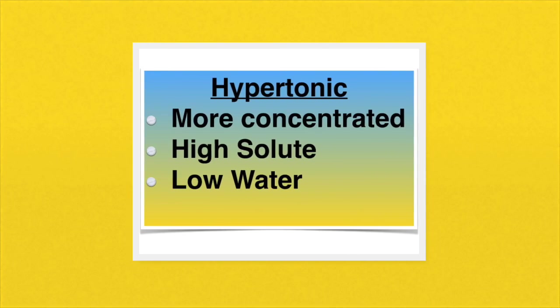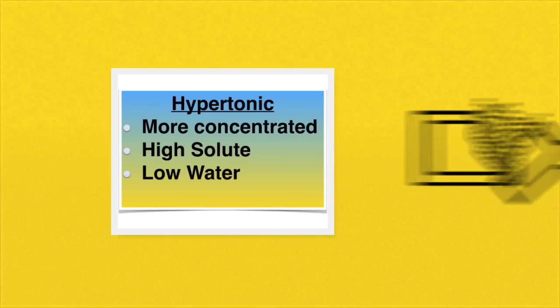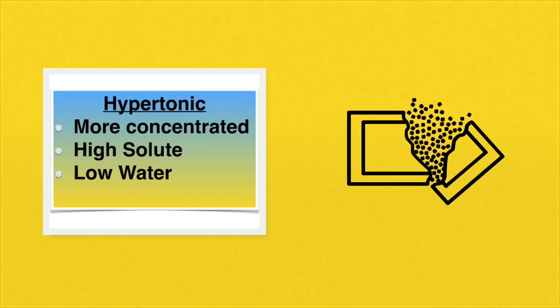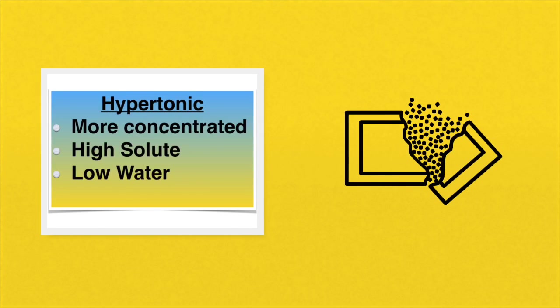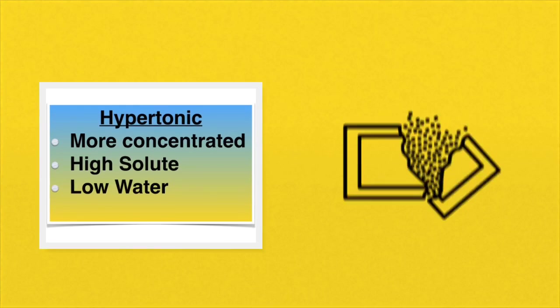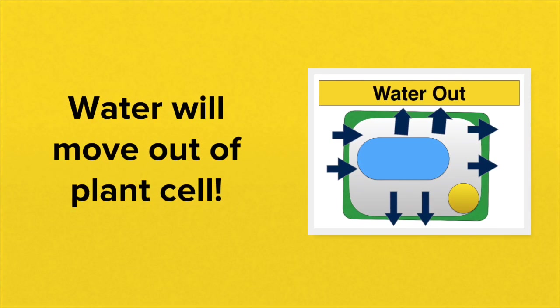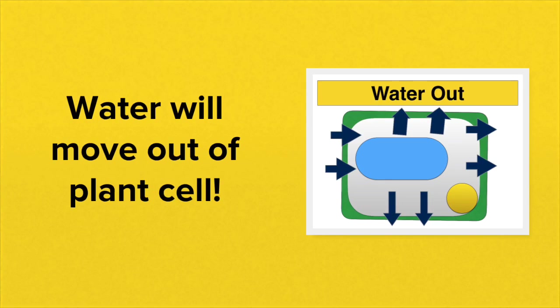So if we put our plant cells into a hypertonic solution, hypertonic meaning that the solution contains many dissolved solutes, so it has low water, high solute concentration, think of sugary or salty water. Water is going to move by means of osmosis out of the plant cell towards that salty or sugary solution.